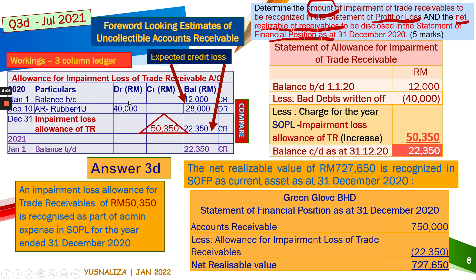My advice is to use the allowance for impairment loss three-column ledger account, as it helps with the construction of the statement of allowance for impairment of trade receivable. That's it — thank you for watching. Assalamualaikum and bye-bye.